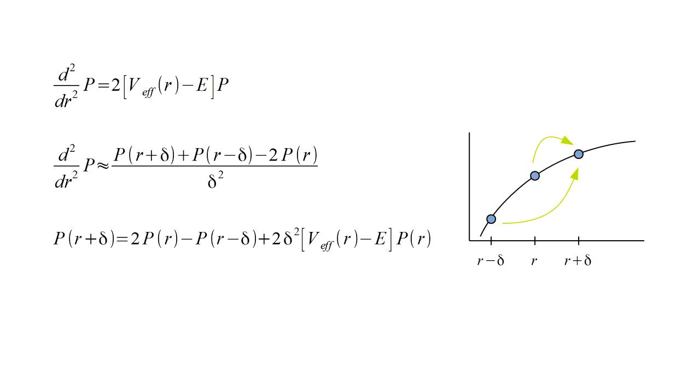There are just two things missing. First, we don't know what energy value to put into the equation. Second, we can't compute the effective potential without knowing the electron orbitals. But we can't solve for the orbitals without knowing the effective potential, a real chicken and egg problem.